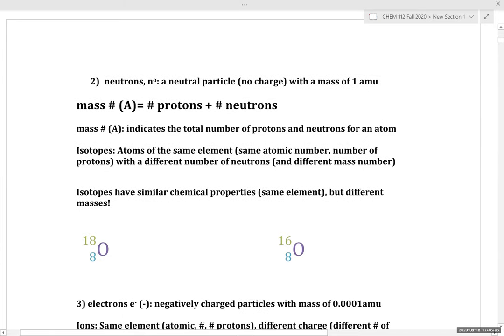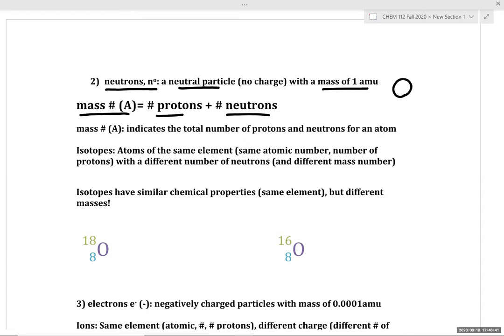Let's also look at neutrons — our second fundamental subatomic particle. A neutron is a neutral particle with a mass of 1 amu. The mass number describes the number of protons and neutrons found in the nucleus. This comes up most frequently when talking about isotopes, which are atoms of the same element with a different number of neutrons.